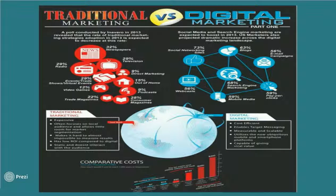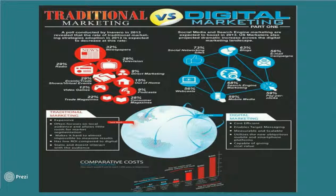Now I'm going to discuss the difference between traditional marketing and digital marketing. A survey taken in 2013 shows that traditional marketing refers to advertising through non-social media content like newspapers and magazines, whereas digital marketing advertises through social networks. In 2013, 73 percent used social network sites and more than 55 percent used blogs and mobile media.